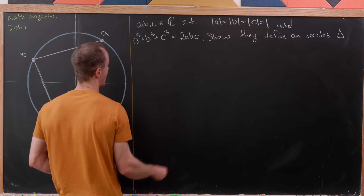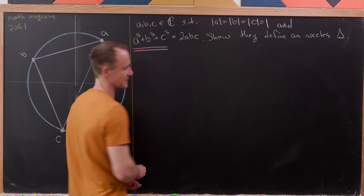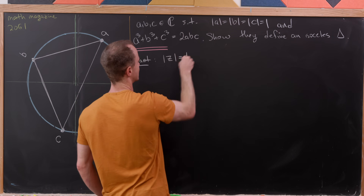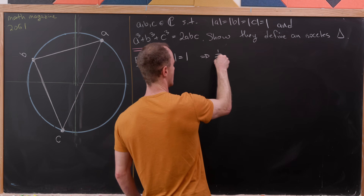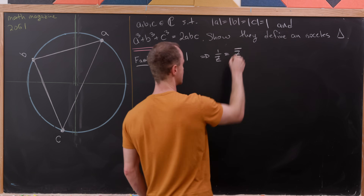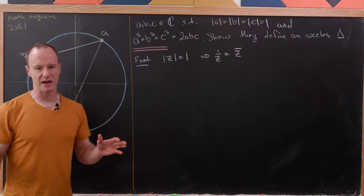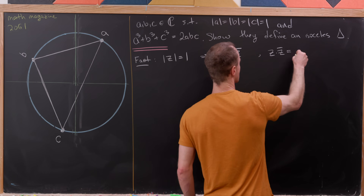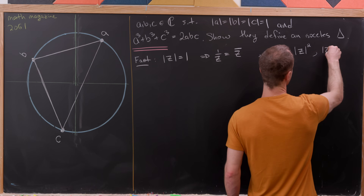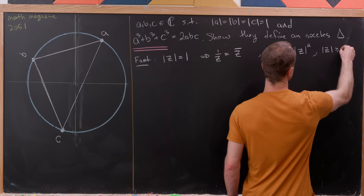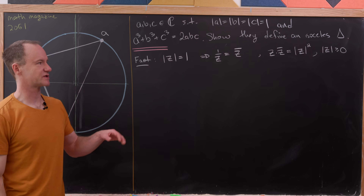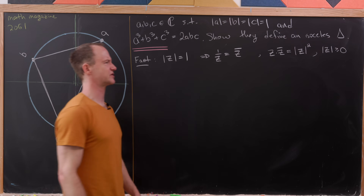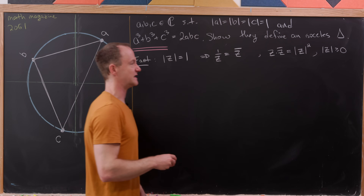Let's get started with our solution, which is modeled after one of the solutions from this magazine. I'd like to start with the following fact: if the modulus of a complex number is 1, then 1 over that complex number is simply equal to the complex conjugate of that number. This is built off the fact that z times z̄ equals the modulus of z squared.